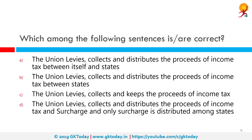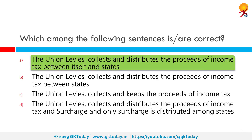Which among the following sentences is or are correct? Among the given options, option A — the union levies, collects and distributes the proceeds of income tax between itself and states — is correct. Taxes in India are levied by the central government and the state government. Some minor taxes are also levied by local authorities such as municipalities. Therefore, each tax levied or collected has to be backed by an accompanying law passed either by the parliament or the state legislature.